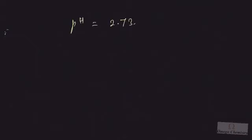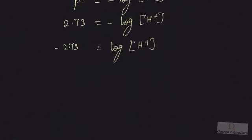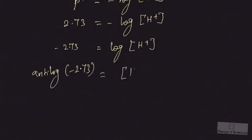For example, if pH is given as 2.73, we know that pH is nothing but the negative log of hydrogen ion concentration. So substituting: 2.73 equals minus log of H⁺ ion concentration. Multiplying by minus 1, we get: log of H⁺ ion concentration equals minus 2.73. We then take the antilog to cancel the log, so antilog of minus 2.73 equals H⁺ ion concentration. Now let's learn how to take the antilog of this negative number.